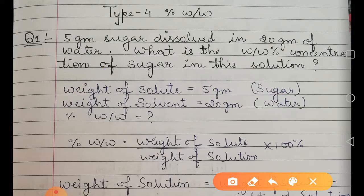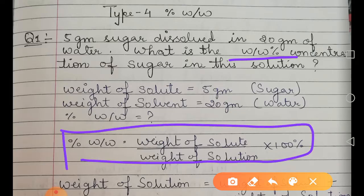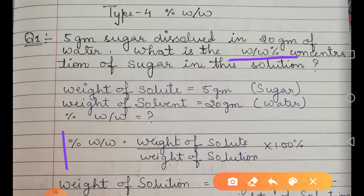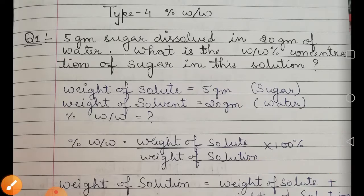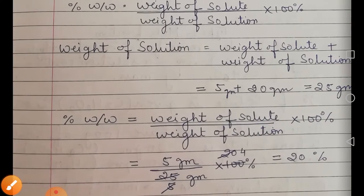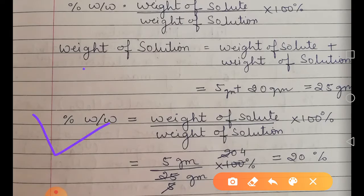We have to find the percentage weight by weight. The formula is: weight of solute upon weight of solution, multiplied by 100%. Now, we have the weight of solute, but we don't have the weight of solution. So we need to calculate the weight of solution first.